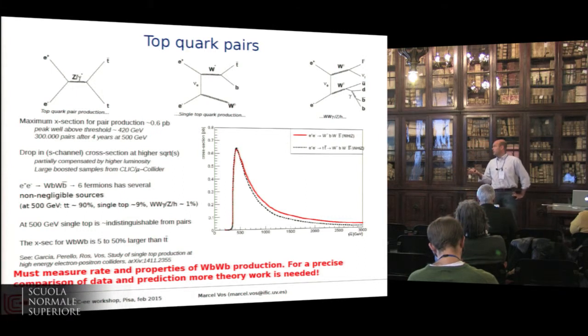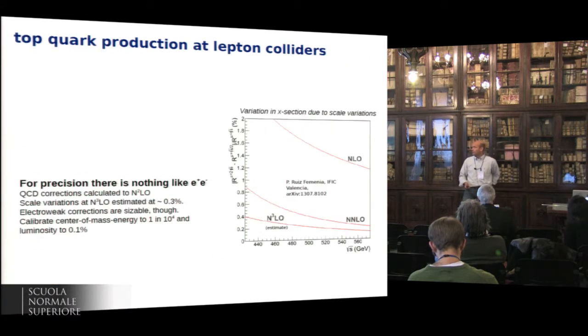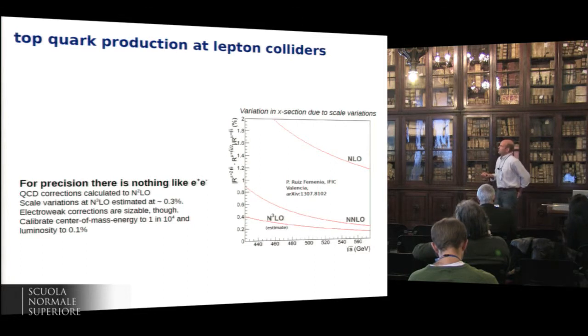Before we get to a pure Tt bar production, we have to deal with diagrams that have a single top or even no tops at all that do result in the same final state. So that fraction can be quite substantial. Here, about half of the events that we start with is actually not Tt bar. I think we'll end up measuring WBWB and calculating WBWB and comparing those at some level.